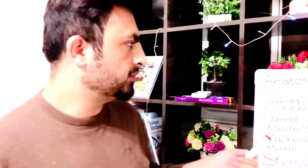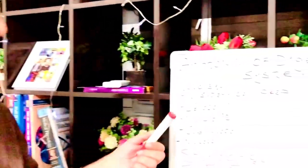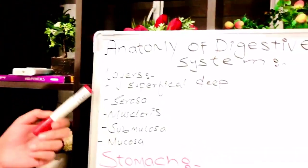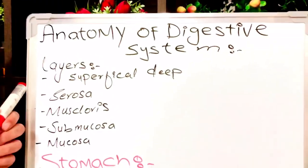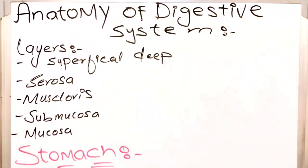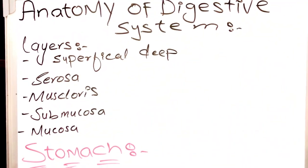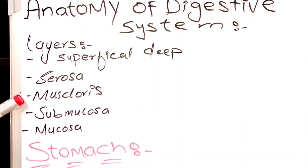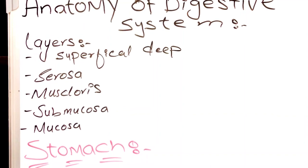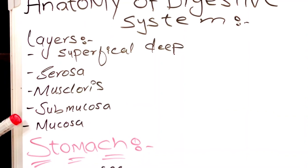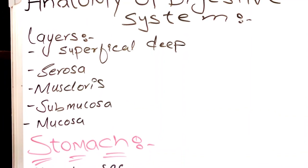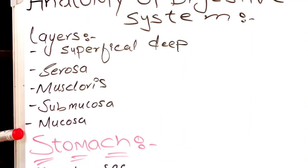Now, the layers of the digestive system. From superficial to deep we have: the serosa layer, then the muscularis layer, then the submucosa, and finally the mucosa.